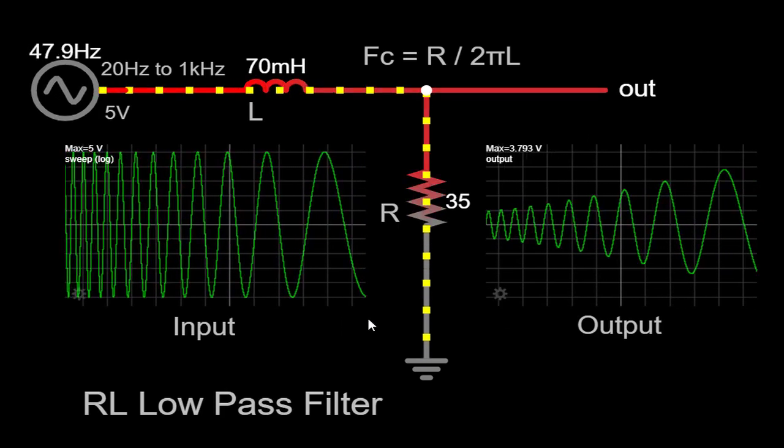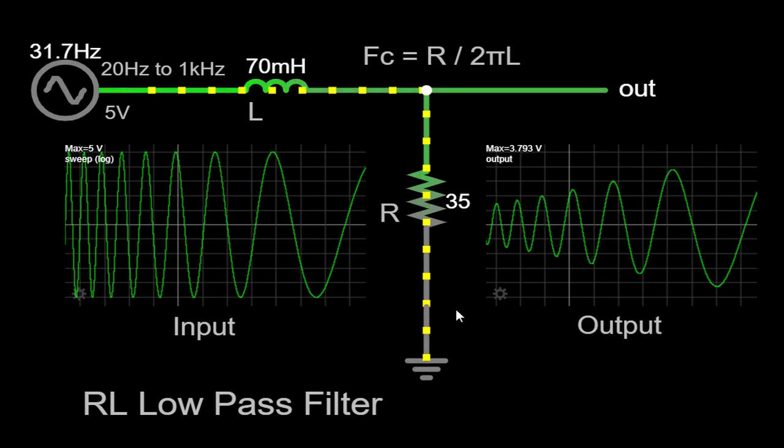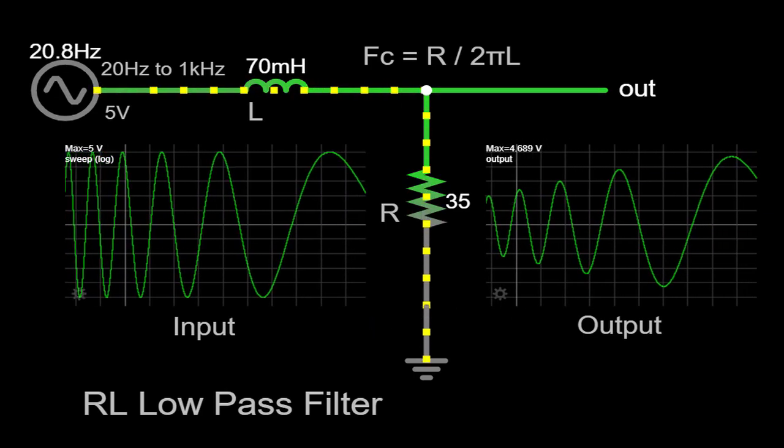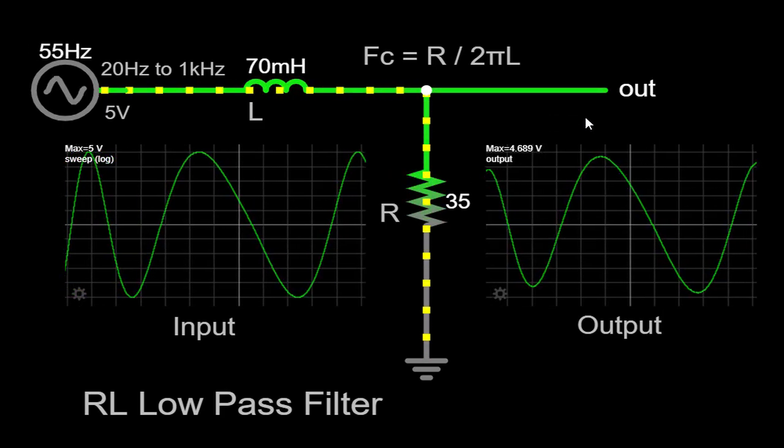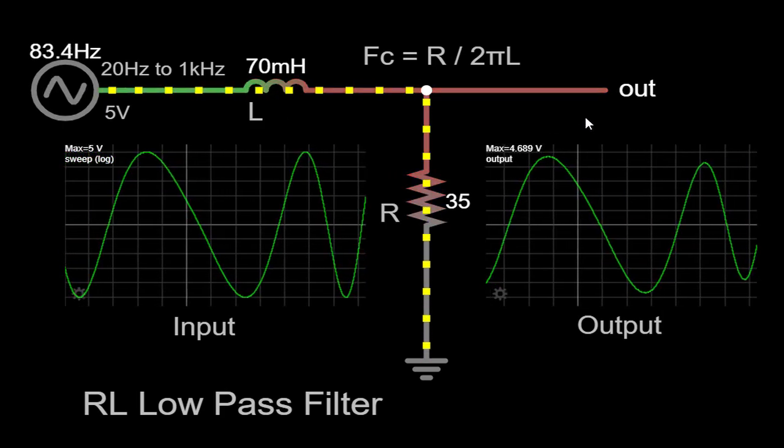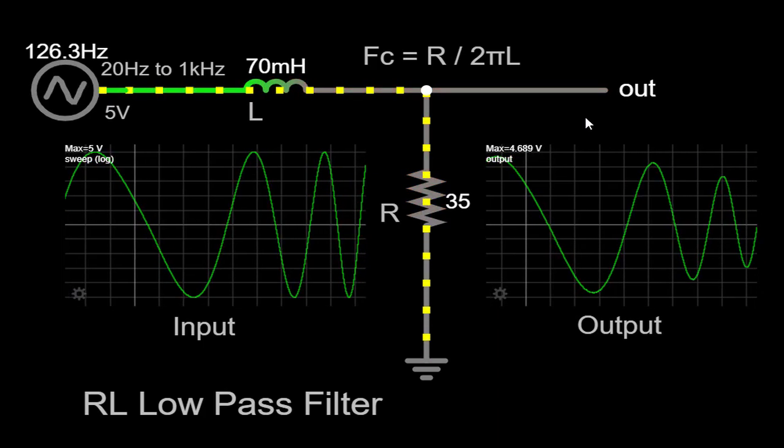It's important to note that the cutoff frequency is determined solely by the values of the resistor and inductor in the circuit. The frequency response of the RL low-pass filter describes how the filter affects different frequencies within the input signal.